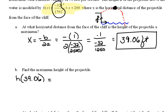So that would be negative 32 over 2,500 times, instead of x, 39.06 squared plus 39.06 plus 200.